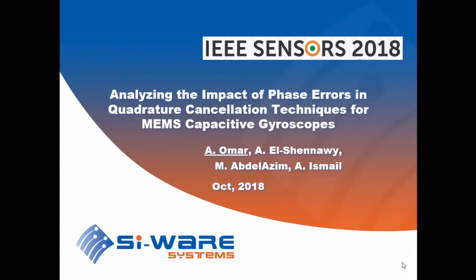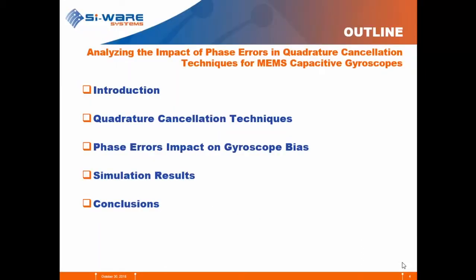Thank you for the introduction. This work is sponsored by Cyware and targets high performance inertial sensing, which is the application from which this work originated. The outline of our presentation starts with an introduction, followed by different quadrature cancellation techniques, the impact of phase error on gyroscope bias for each technique, simulation results to back up the analysis, and then conclusions.